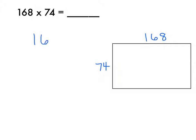168 times 74. So again, I'm setting it up vertically, making sure to align my place values. And I'm going to be solving 168 times 4 and 168 times 70. So over here in my array, it would be very helpful for me to show that by breaking apart the 74.